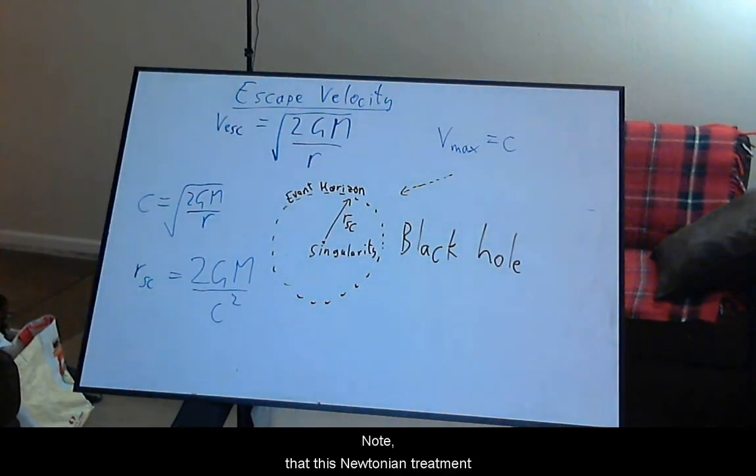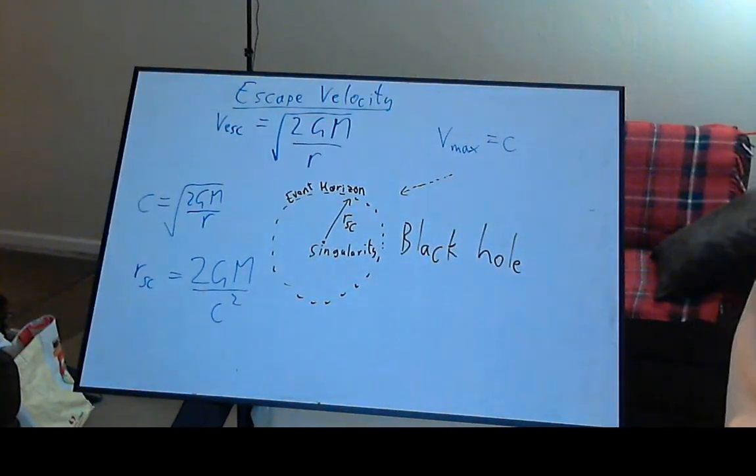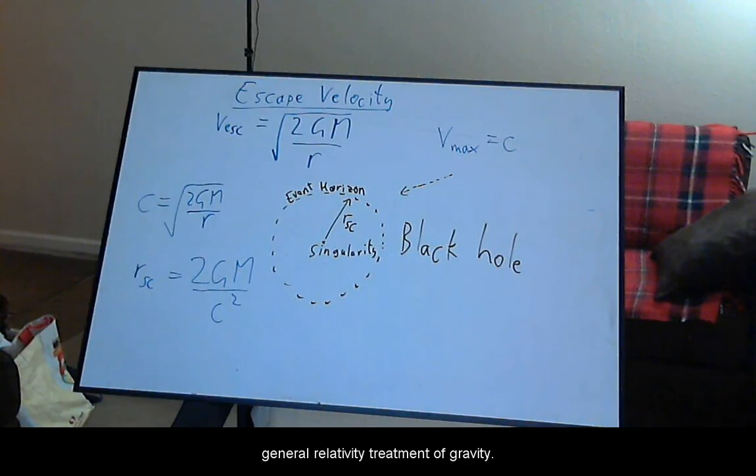Note that this Newtonian treatment of gravity still only predicts the escape velocity around a black hole and not any of the time dilation associated with the general relativity treatment of gravity.